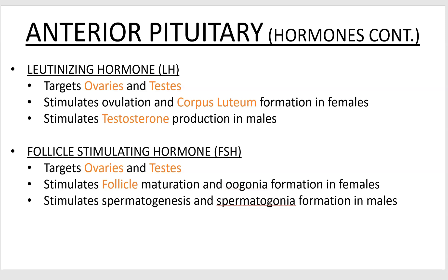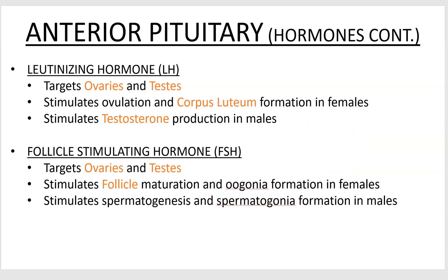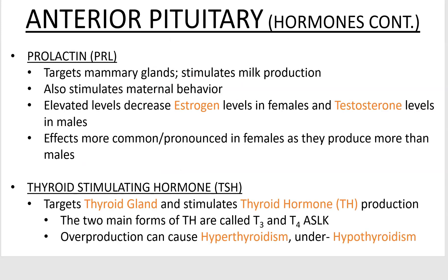Follicle stimulating hormone also targets the gonads and stimulates the follicle — the structure that grows the oocyte within it. So if this is an ovary, you'd have a follicle, which is a small chamber, containing a little oocyte inside. In males, FSH helps with sperm formation and the development of the original cells responsible for sperm.